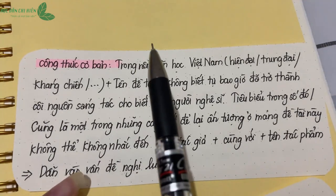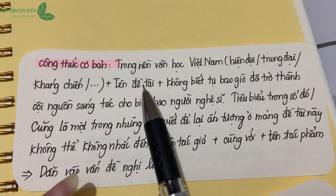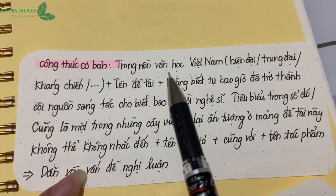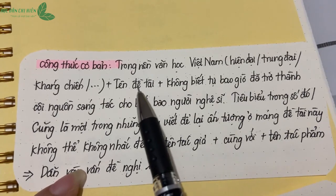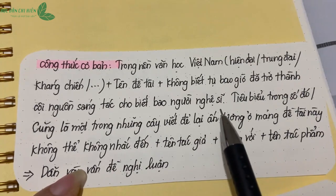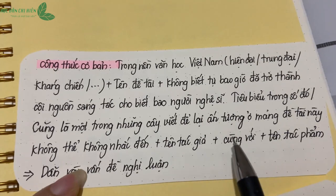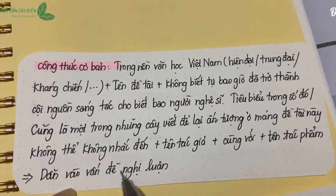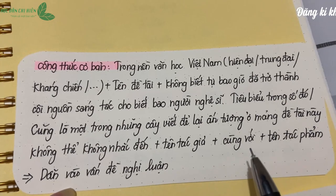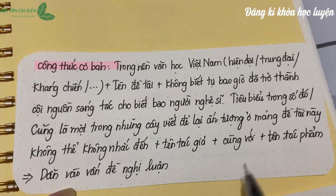Ví dụ hai: tác phẩm Người Lái Đò Sông Đà của nhà văn Nguyễn Tuân. Các bạn có thể viết: Trong nền văn học Việt Nam hiện đại, những dòng sông không biết từ bao giờ đã trở thành cội nguồn sáng tác cho biết bao người nghệ sĩ. Tiêu biểu trong số đó không thể không kể đến Nguyễn Tuân cùng với tùy bút Người Lái Đò Sông Đà. Để lại ấn tượng trong tùy bút này là hình ảnh ông lái đò mang trong mình vẻ đẹp mưu trí, dũng cảm, đồng thời cũng toát lên phong thái nghệ sĩ.